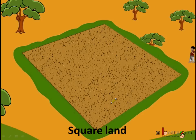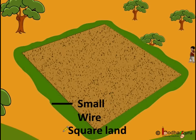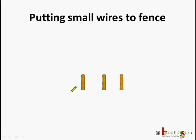It is a square land. He wished to do the fencing around the land so that no stray animals came in and destroyed his farm. He had many small pieces of wire which he thought he could use to fence the farm. He put the logs around the farm and used the small wires to fence it like this.